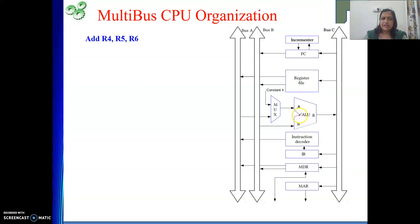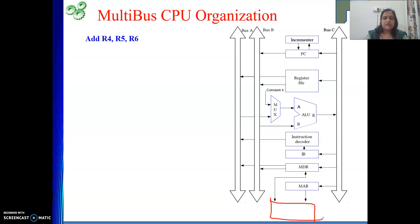What are our steps? Who can point to the instruction? We know that is PC. So PC's content, we need to give to MAR. Because to memory — here, your memory module is connected — only MAR can give the address. But where is my address right now? In the PC. So from PC, I need to get the address into MAR.